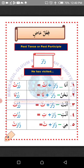Fi'ilun madin — past tense. Fi'ilun madin is a form of verb in Arabic that one can use to talk about an incident that took place in the past.